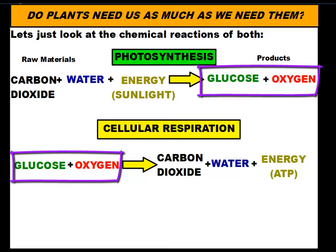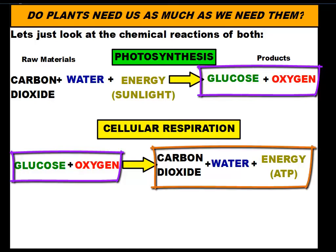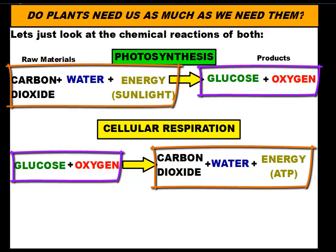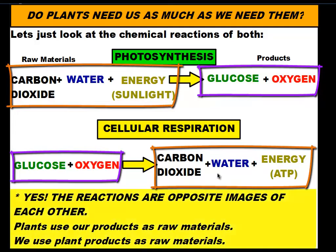That shows us that we really depend on plants, either directly or indirectly. But do plants need animals? Do animals help out plants as well? Yes, we do. The products of cell respiration — carbon dioxide, water vapor that eventually returns to Earth as liquid water, and energy — are the same as the raw materials of photosynthesis. The only difference is the energy types: we keep ATP to carry out life processes, while the sun is the energy source for photosynthesis. Plants do actually rely on us.